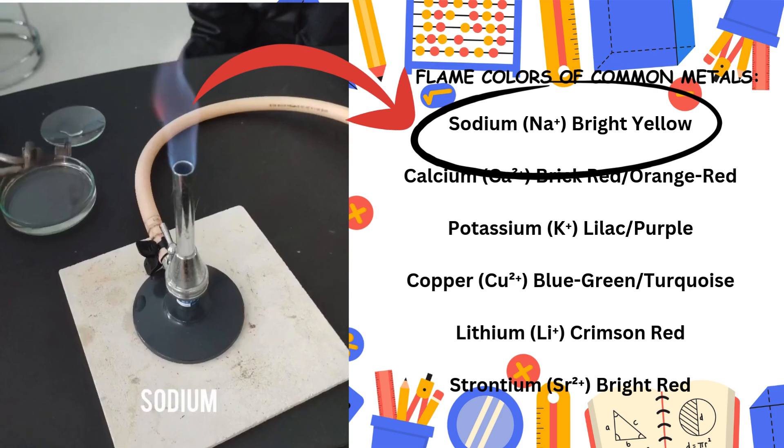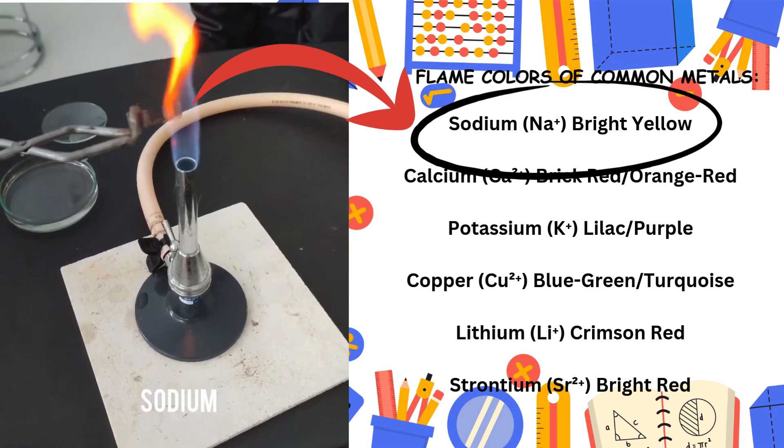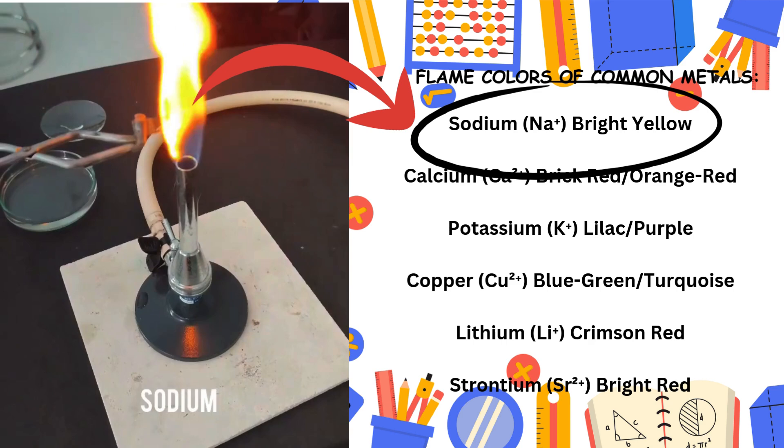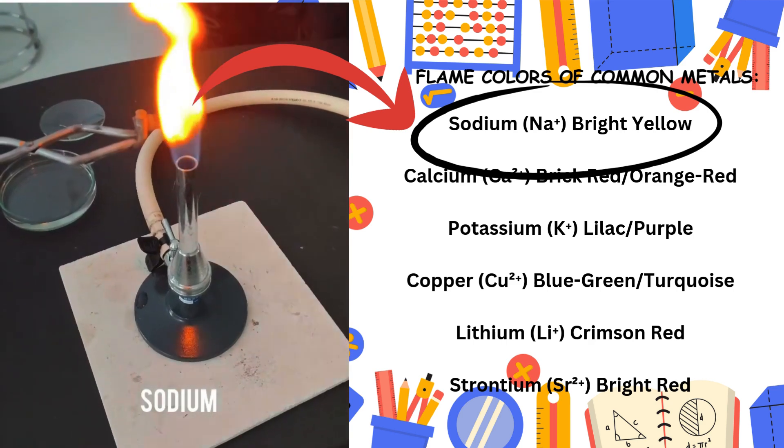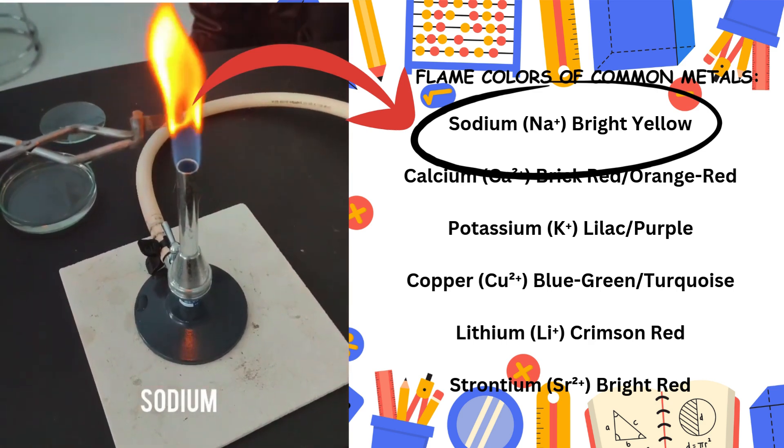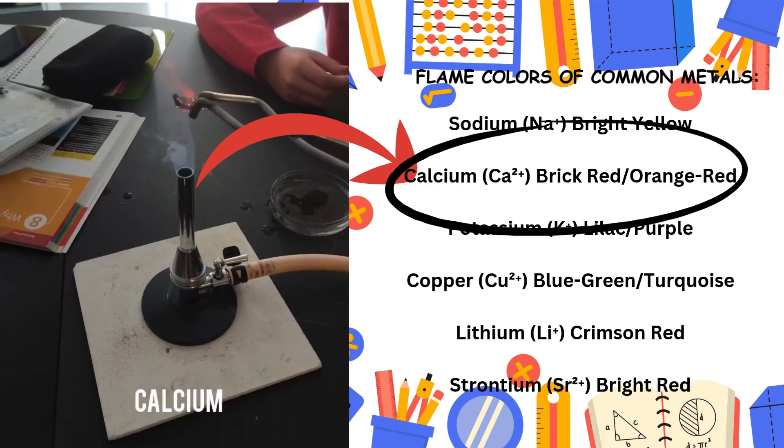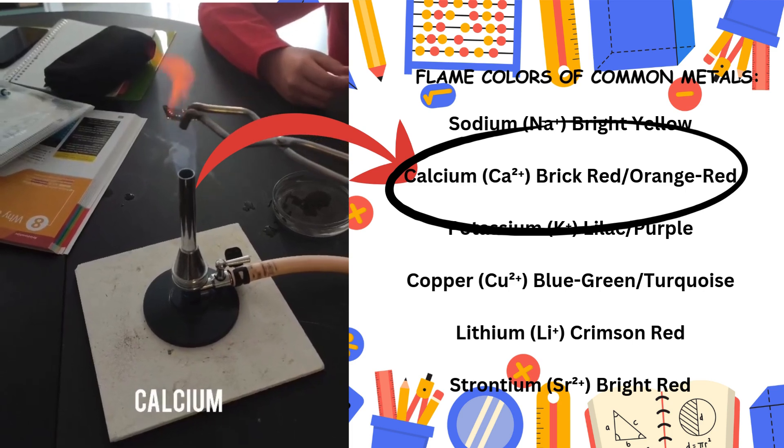Flame colors of common metals: Sodium (Na+) bright yellow. Calcium (Ca2+) brick red or orange-red.